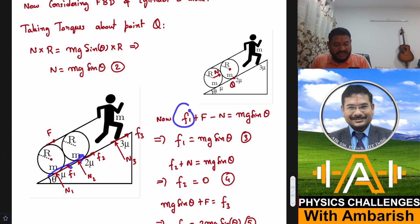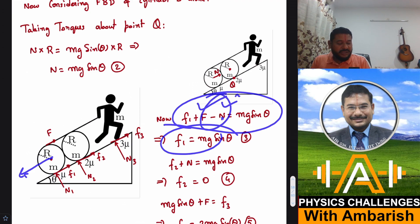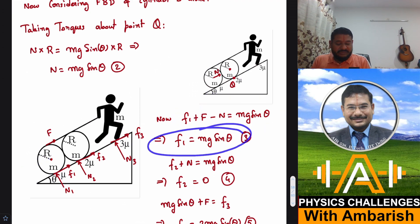F1 is upwards, capital F is upwards, and normal reaction minus N should balance mg sin θ. We've already found capital F and N, so just put in the values. You get F1 as mg sin θ, so the required frictional force is mg sin θ.